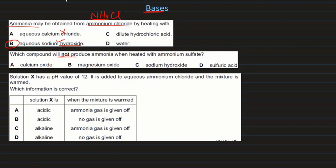Which compound will not produce ammonia when heated with ammonium sulfate? Bases react with ammonium salts to make ammonia. Calcium oxide is a base — it reacts. Magnesium oxide reacts to form ammonia gas. Sodium hydroxide also reacts. But sulfuric acid will not react with ammonium sulfate to form ammonia gas.